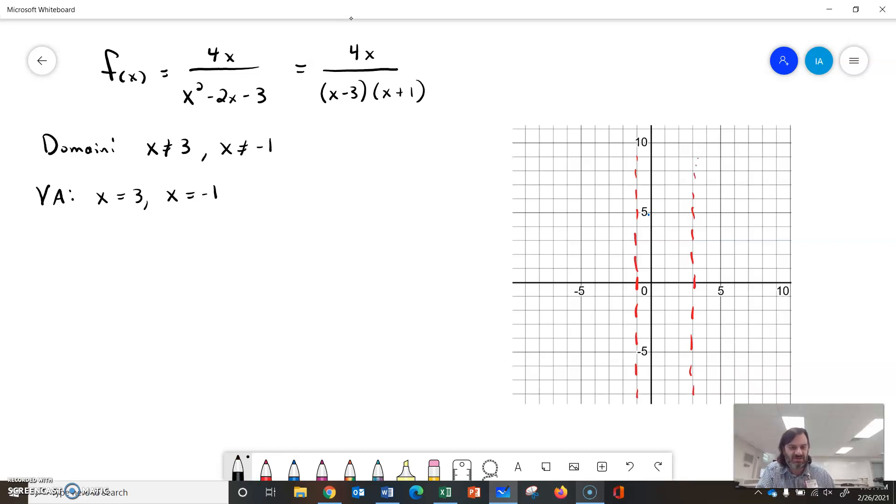Then I want to find my horizontal asymptote, if it exists. I look at the original function 4x, which is 4x to the first because I'm going to compare exponents, over x squared minus 2x minus 3. The exponent on top is 1, the exponent on the bottom is 2,